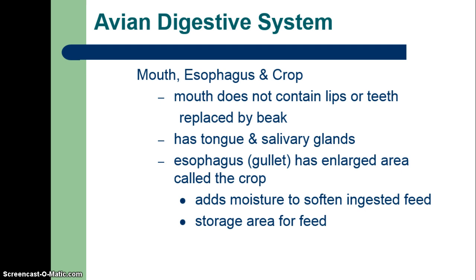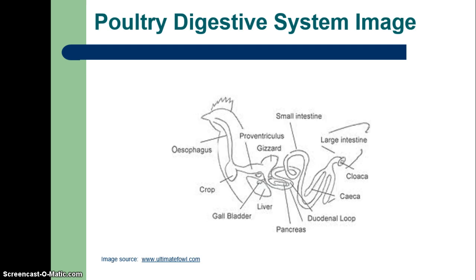A couple of things on the avian digestive system. The mouth, esophagus, and crop have a lot of differences. There is a mouth but it doesn't have lips or teeth — it's been replaced by a beak. It does have a tongue and salivary glands. The esophagus or gullet has an enlarged area called the crop, which helps to moisten the feed and acts as a storage area. Below the crop is the proventriculus, which functions a lot like a stomach, and then feed passes into the gizzard, where rocks and grit that the poultry have eaten help to crush the grain further before it's digested by the rest of the system.